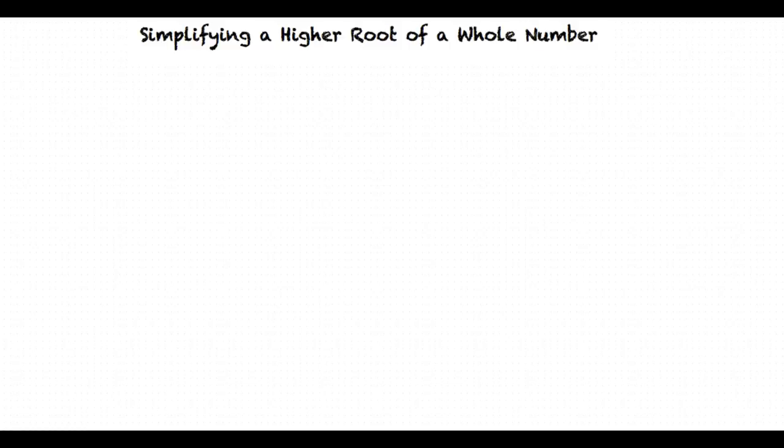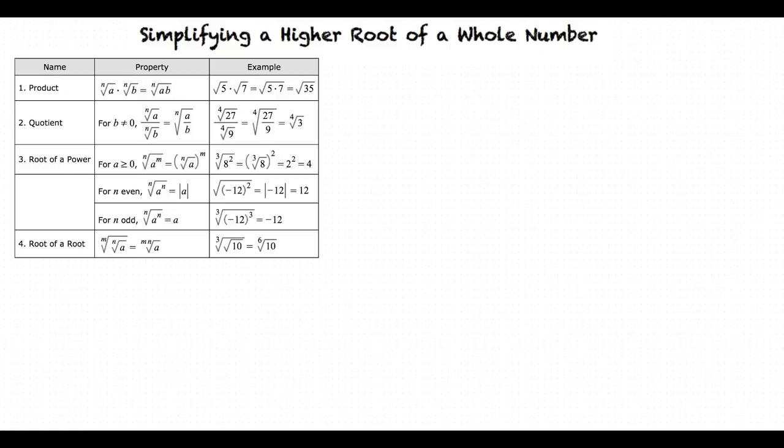In order to know how to simplify a higher root of a whole number, we should first know the properties of radicals. Take a second to look at the different properties. In this table, a and b are real numbers or variables, and m and n are positive integers.